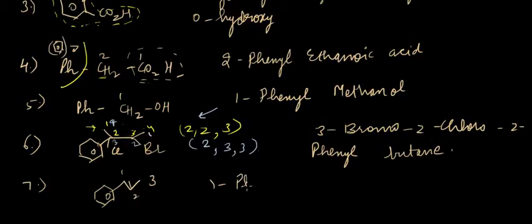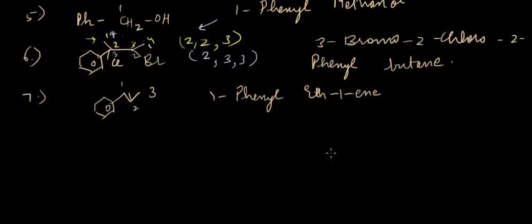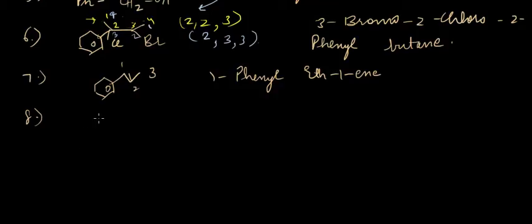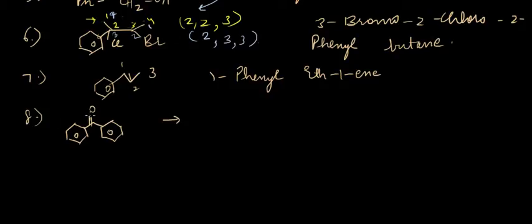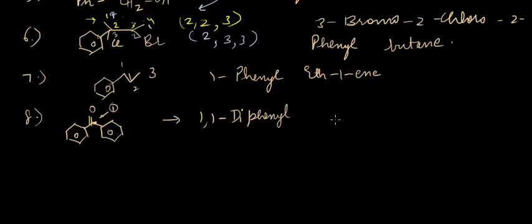For a compound with an alkene or double bond, we start numbering to give the substituent the lowest locant: 1-phenyl prop-1-ene. For a compound where the phenyl ring is the only carbon in the chain as a functional group (ketone), the name is 1,1-diphenyl methanone.